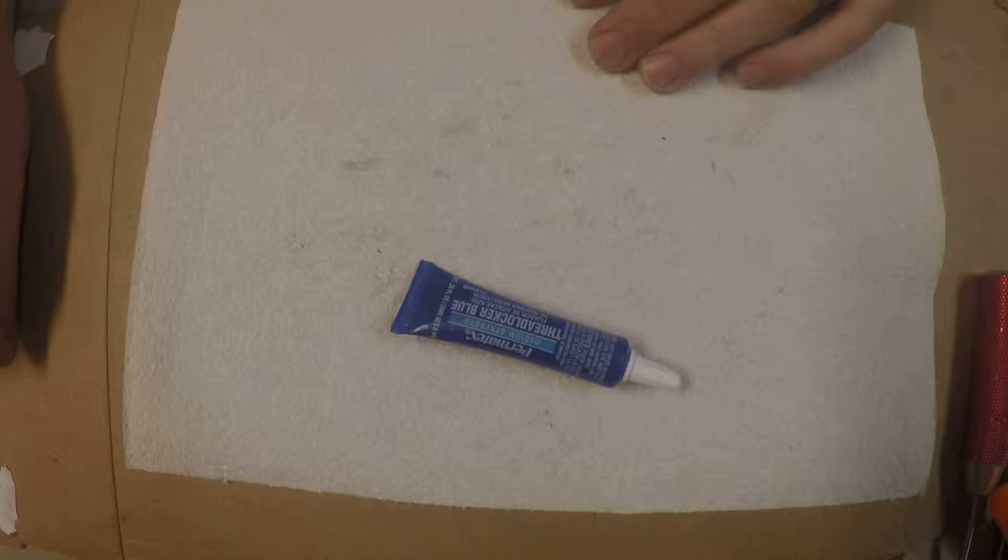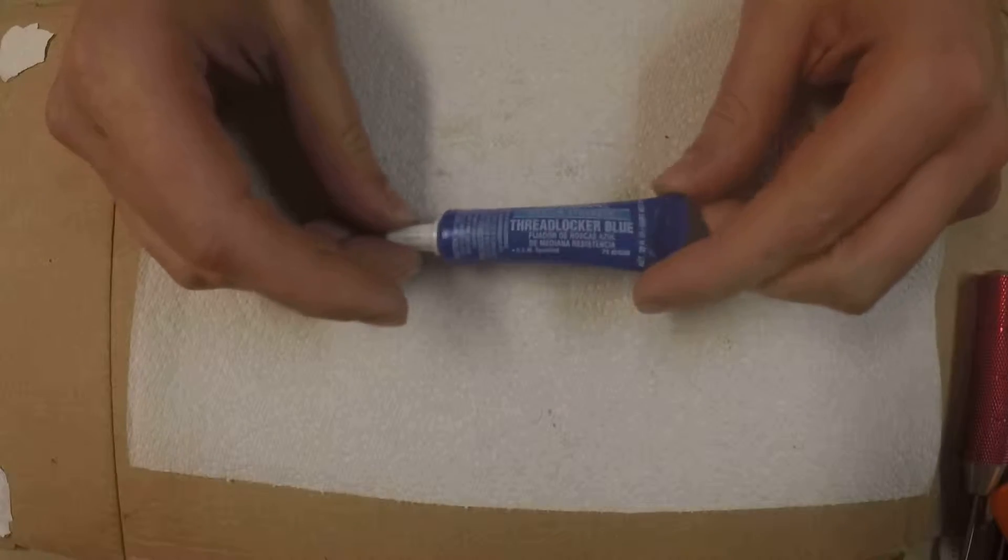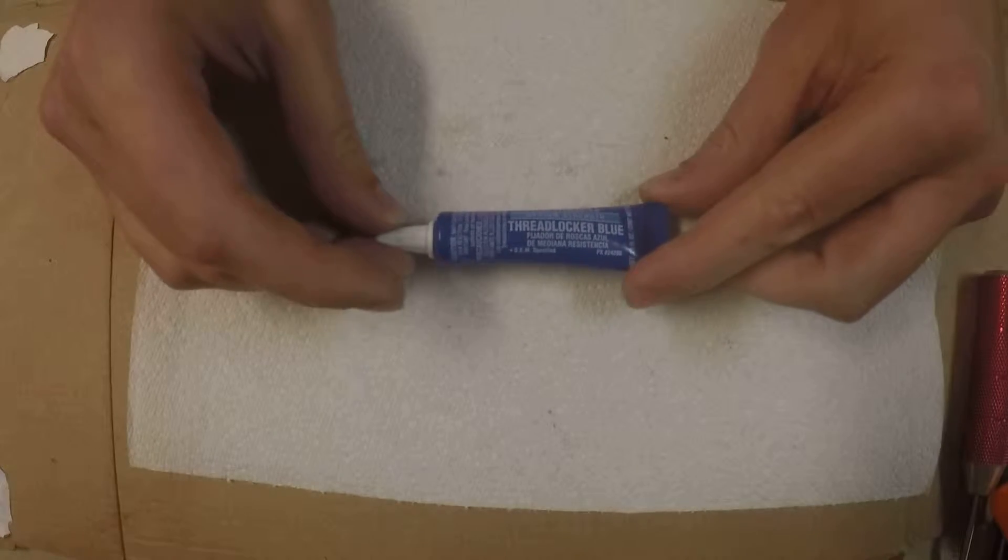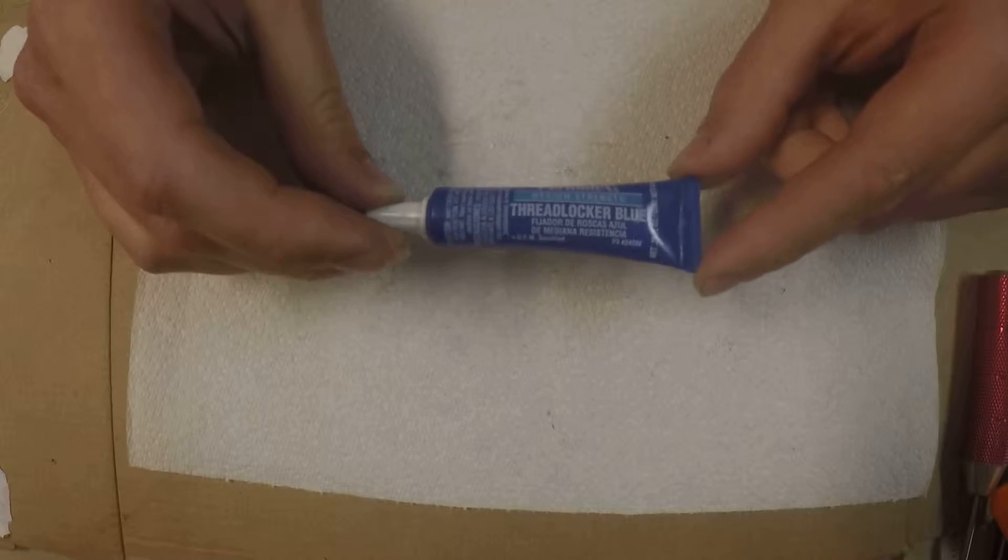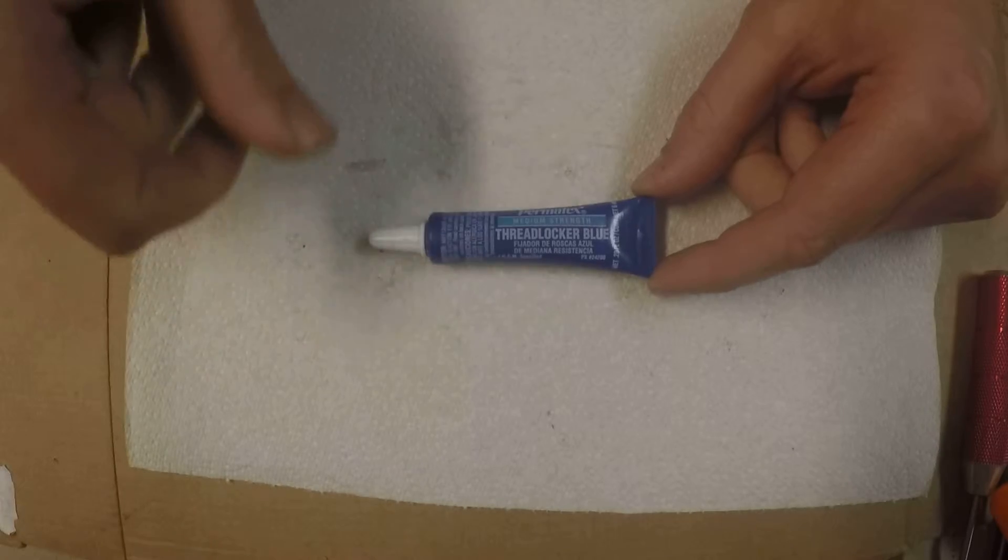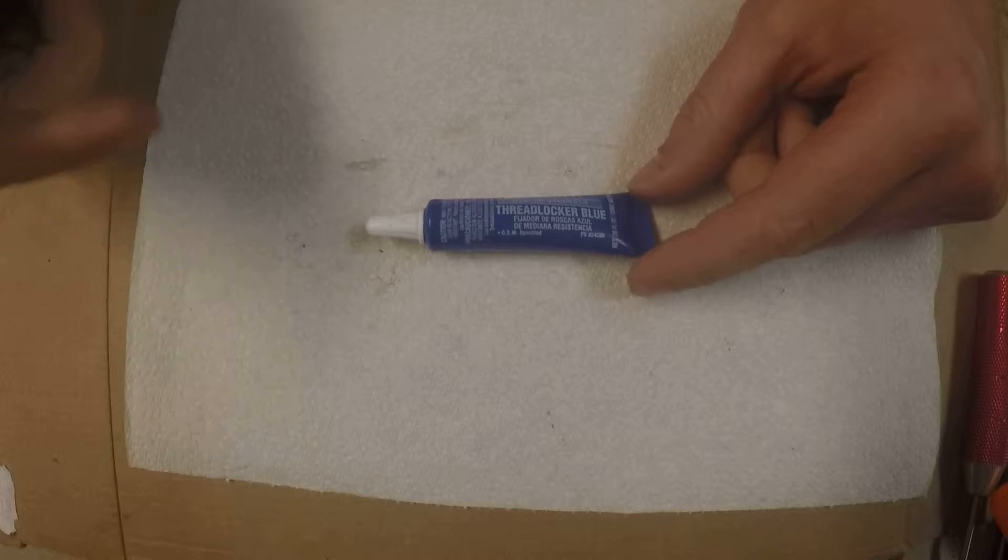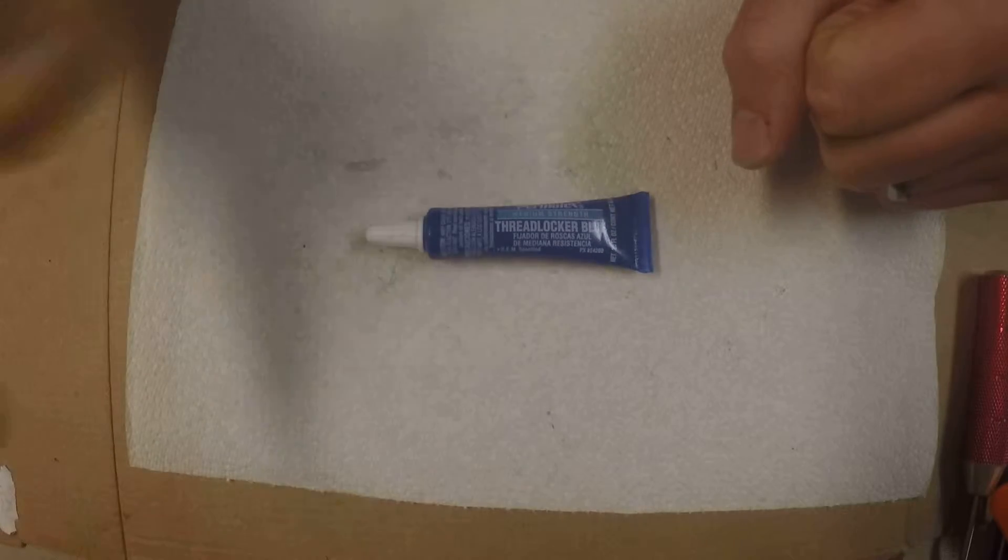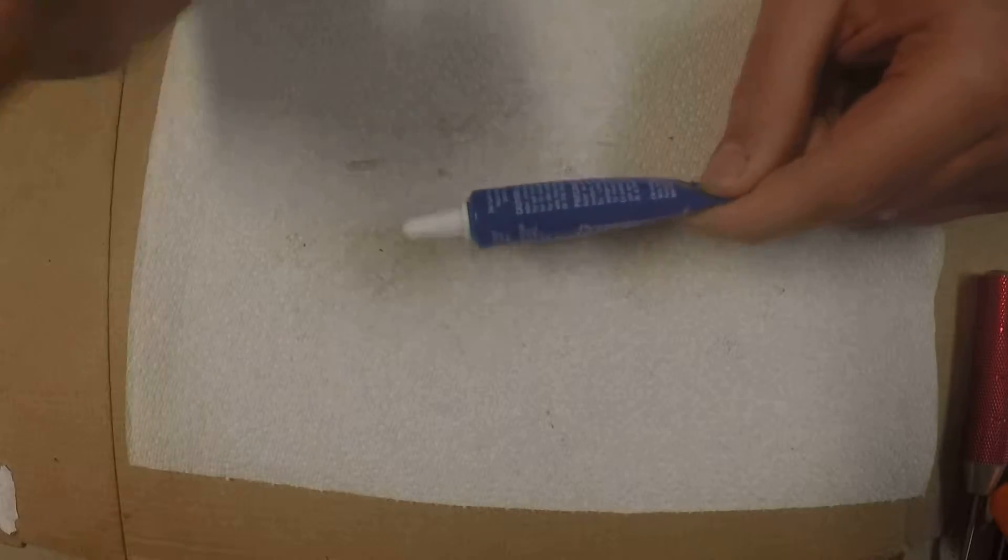Blue Loctite is perfect. If you're not sure what Loctite is, it's kind of like a glue for screws and mechanical things. Different colors mean different strengths. Blue means you can break it by your hand, as in like you're using a screwdriver, you can undo it, but most time won't undo by itself. So if you have a screw that keeps like coming out on its own, you put a little dab of Loctite in there and screw it back in, it shouldn't come out on its own again.